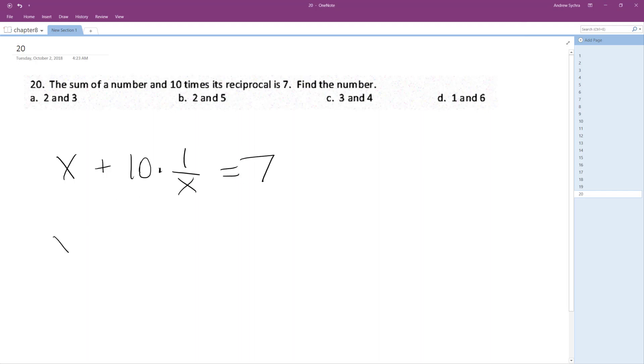So x plus 10 over x. 10 over x is the same thing as 10 times the reciprocal. Our common denominator is going to be x, so we get x squared plus 10 equals 7x.